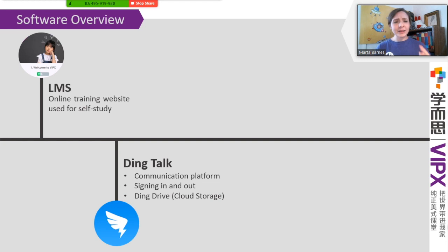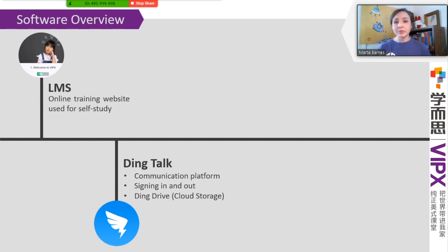I'll explain a little bit more about how that functions when I'm doing the walkthrough of Ding Talk very shortly. Another exciting feature integrated into Ding Talk is called the Ding Drive. Essentially this is cloud storage, very similar to Google Drive, OneDrive, or even Dropbox. We have all of our necessary files already available in our application, and once you join our organizational group, you'll have access to these files too.